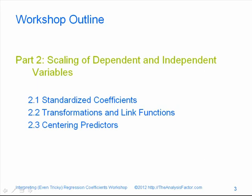In Module 2, we will talk about three different issues of scaling of the variables — the dependent and the independent variables. That includes standardized versus unstandardized coefficients: what's the difference, when do you use them, and what do they mean? Then transformations and link functions — for example, if you have to do a log or square root transformation to make your assumptions work, what are the implications for understanding your results? And third, centering predictors. Centering is simple to do, and as you get into more complicated regression models it becomes more and more helpful. It does not necessarily change your results, but it does often make interpretation easier.